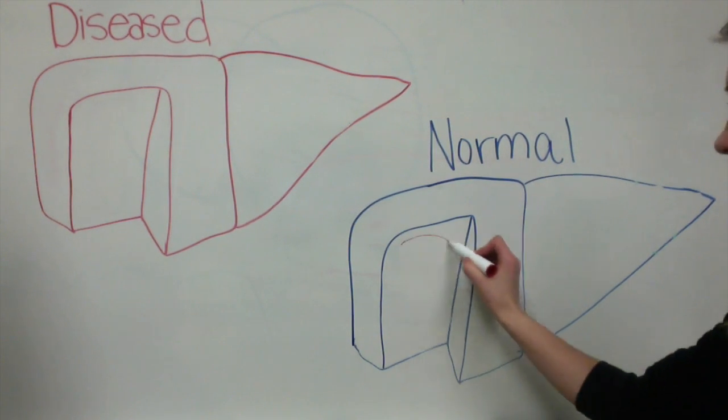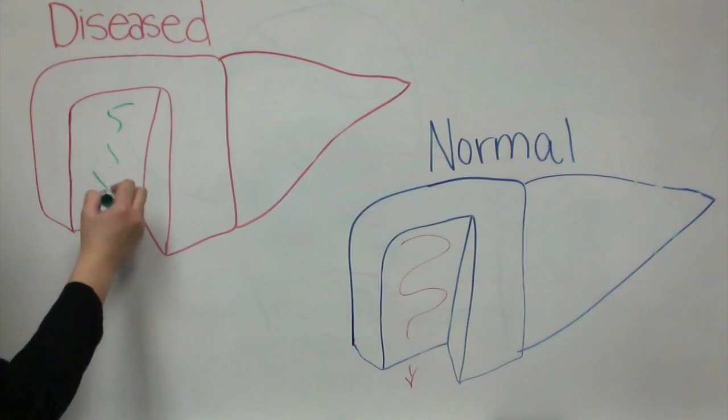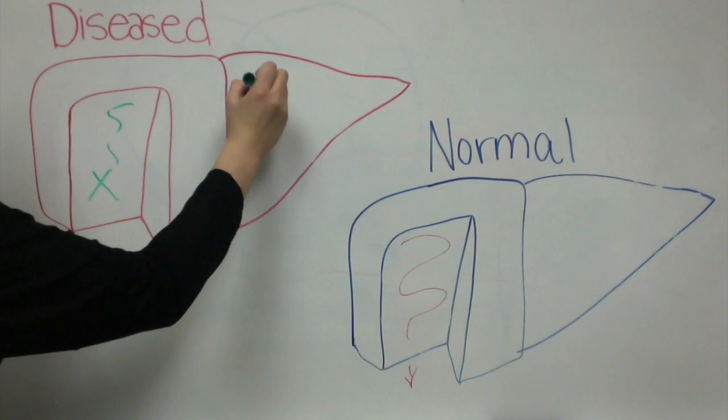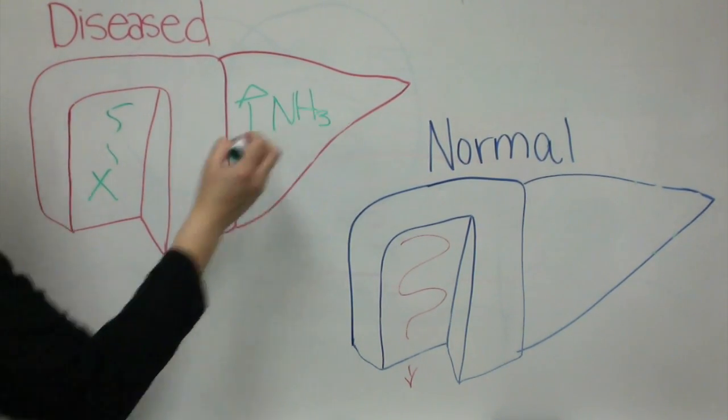The liver normally filters nutrient-rich blood, but when it is damaged from hepatitis C, it no longer filters the blood properly, and toxins, like ammonia, are no longer filtered out.